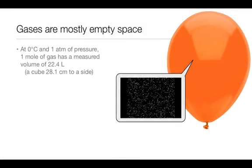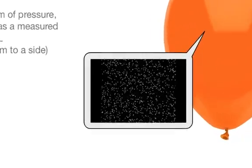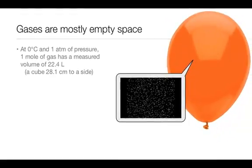The first postulate of the kinetic molecular theory is that gases are mostly empty space. So if we were to look at a microscopic, a really, really, really microscopic image of the gases in this balloon, it would be something like the little video that you see running down in that black box.